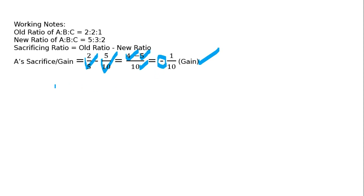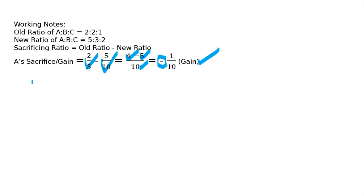For B — sacrifice or gain? Old ratio minus new ratio: 2/5 minus 3/10. LCM 10, so 4/10 minus 3/10 = 1/10. This is positive, so B is sacrificing. Jiska plus mein aayega uska sacrifice hoga — B's sacrifice is 1/10.